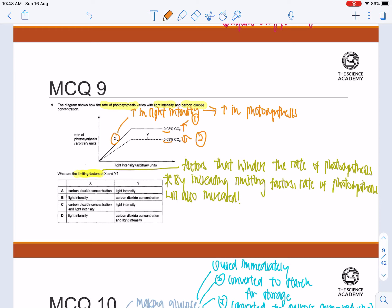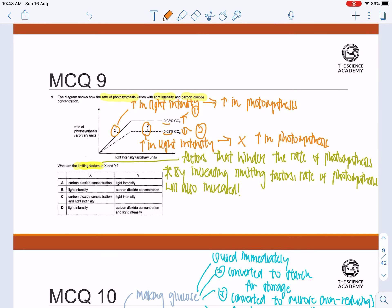Whereas for Y, increased light intensity does not increase the photosynthesis rate at all. This shows that at point X, the limiting factor will be light intensity. So let's eliminate option A and C first.